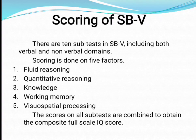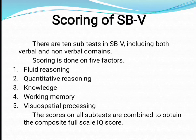SB5 provides a broad scoring system because it provides separate scores on 10 different subtests. It also provides a full verbal IQ score, an IQ score on the nonverbal domain, and separate scores on all five factors: fluid reasoning, quantitative reasoning, knowledge, working memory, and visual spatial processing. The scores of all subtests are combined to obtain the composite full scale IQ score.